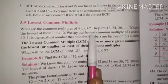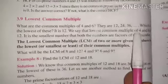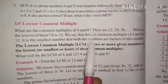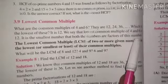It is 12. We say that the lowest common multiples of 4 and 6 is 12. It is the smallest number that both the numbers are the factors of this number.